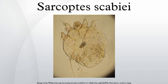The disease produces intense, itchy skin rashes when the impregnated female tunnels into the stratum corneum of the skin and deposits eggs in the burrow. The larvae, which hatch in three to ten days, move about on the skin, molt into a nymphal stage, and then mature into adult mites. The adult mites live three to four weeks in the host's skin.